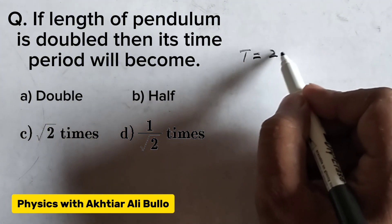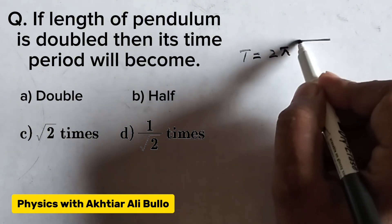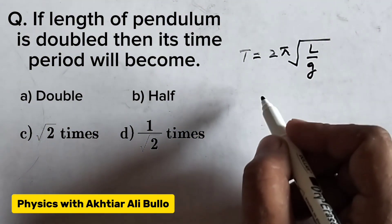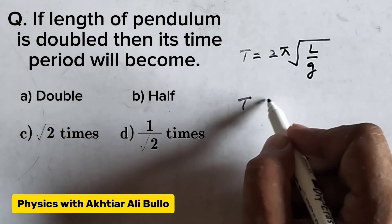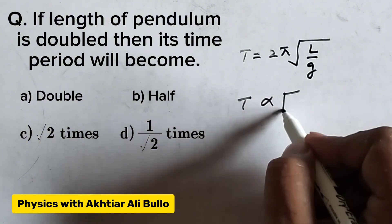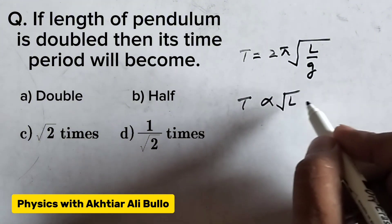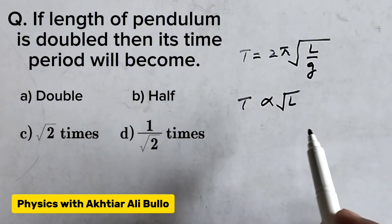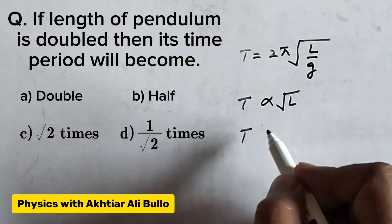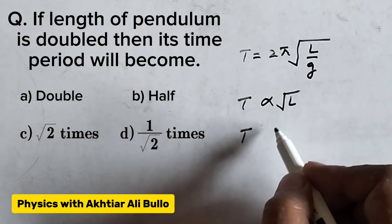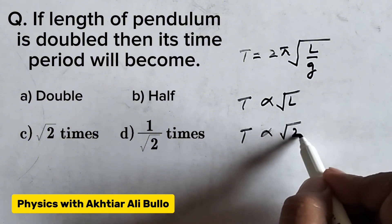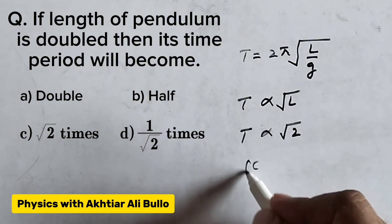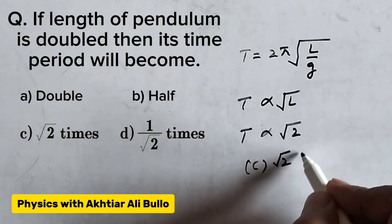T = 2π√(L/g). So the time period is directly proportional to the square root of length. If the length of the pendulum becomes two times, then the time period will become √2 times. So the correct option will be (c) under root two times.